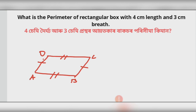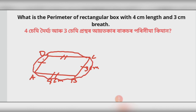What is the perimeter of a rectangular box? The rectangular box is 4cm on one side. I should put this element in the middle of the line. It is 3cm on the other side.